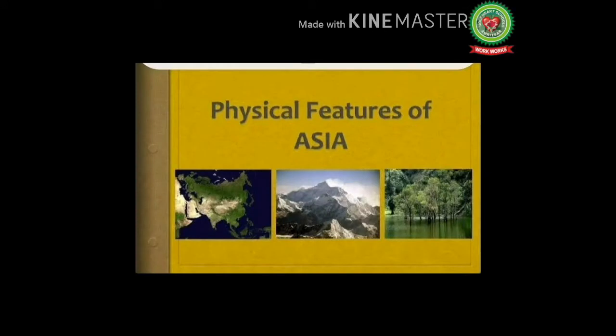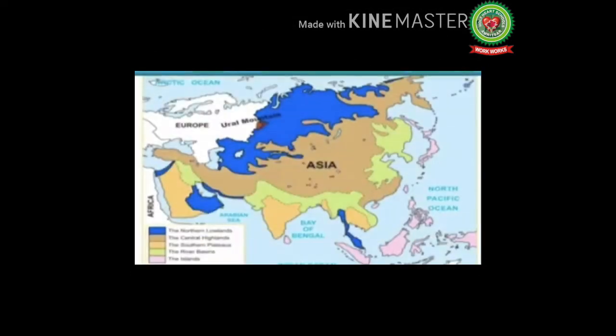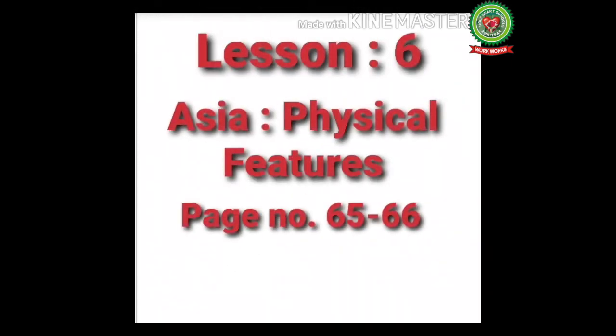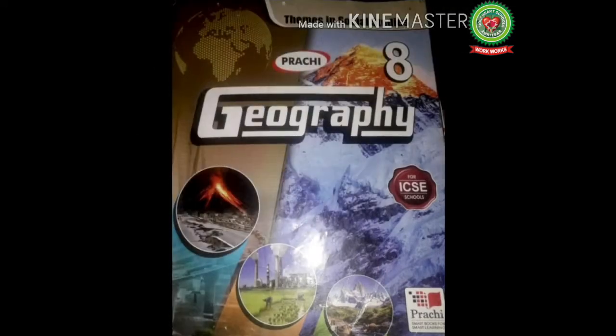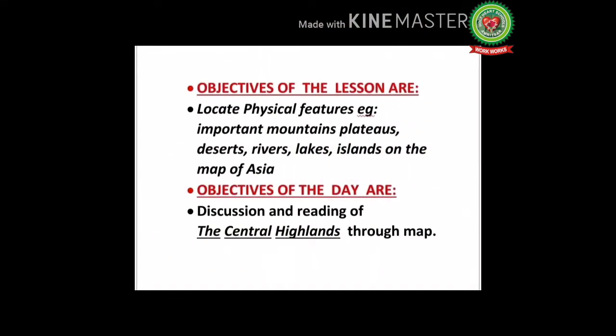Hello students, welcome to the geography class. The topic is physical features of Asia — this is my second lecture. So far we have discussed the northern lowlands as the first physical feature of Asia. This is lesson number six: Asia Physical Features, given on page number 65 to 66 of your geography book.